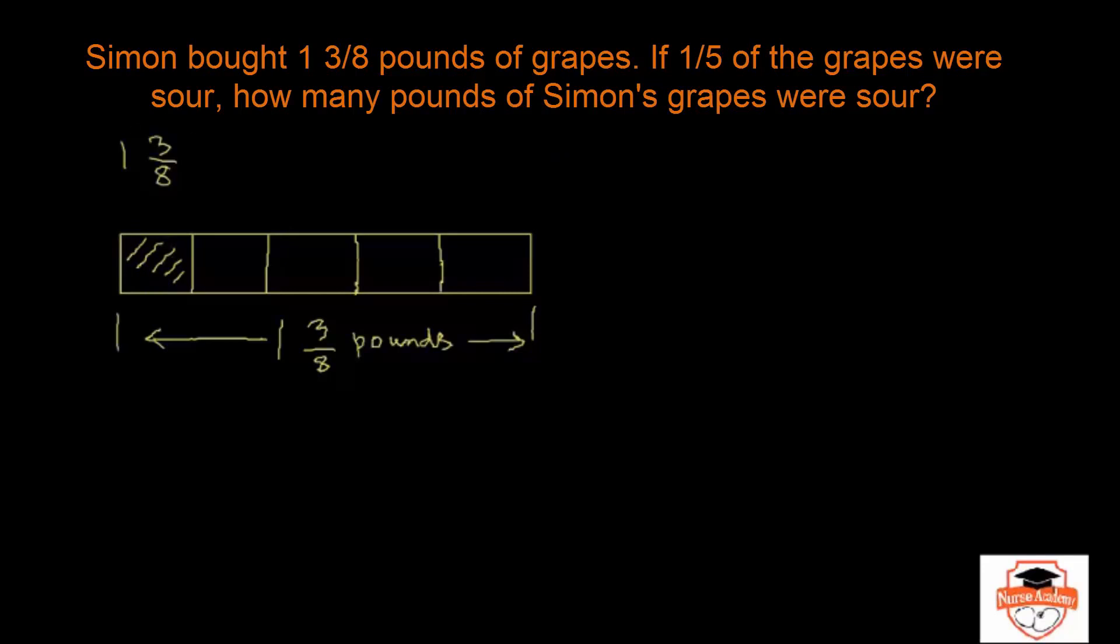So this portion is sour and they want you to find out how many pounds is this? How many pounds of Simon's grapes were sour? So this is a classic case of multiplication. Remember 'of' means multiplication. So basically you want to find out what's 1/5 of 1 3/8 pounds.